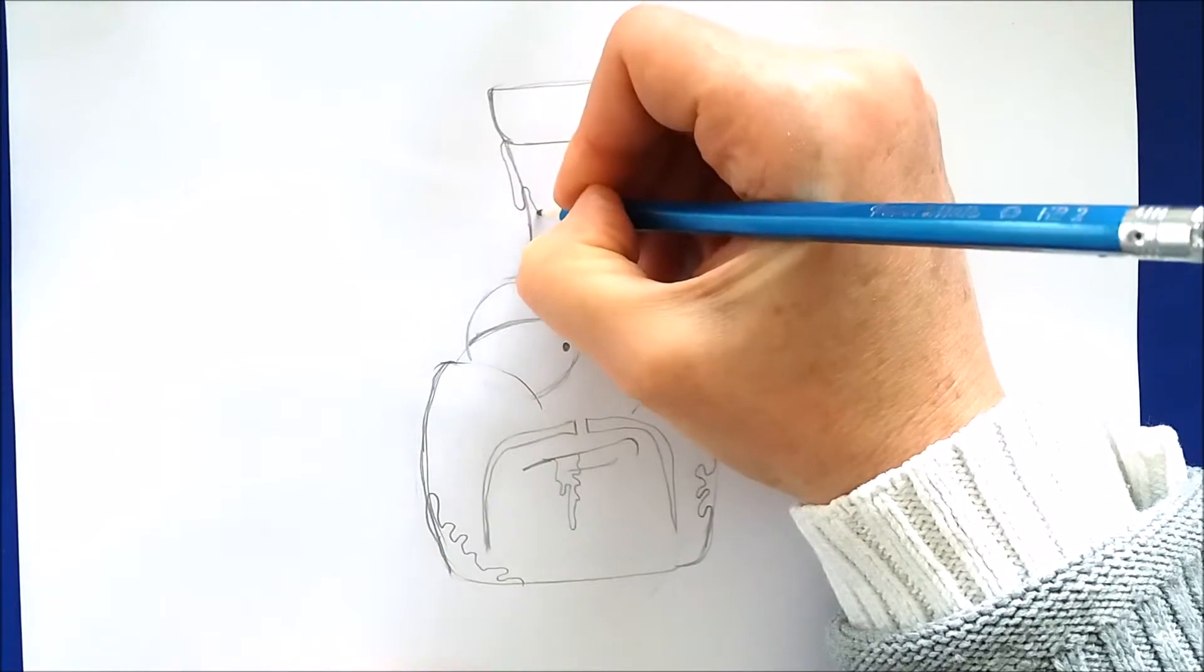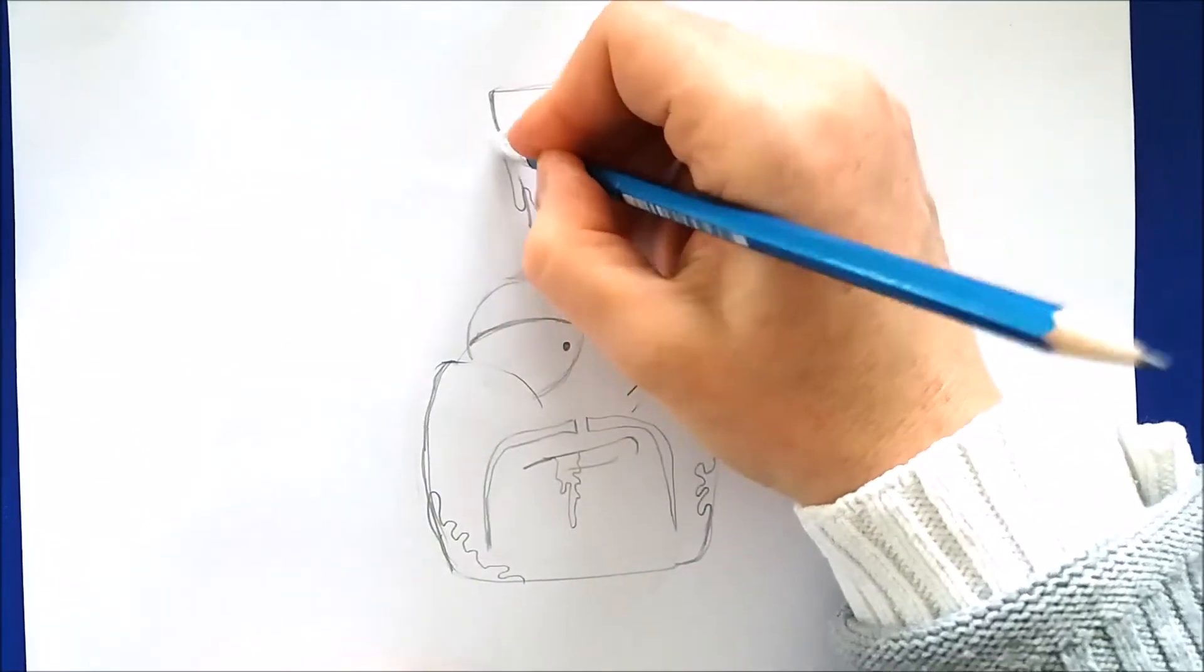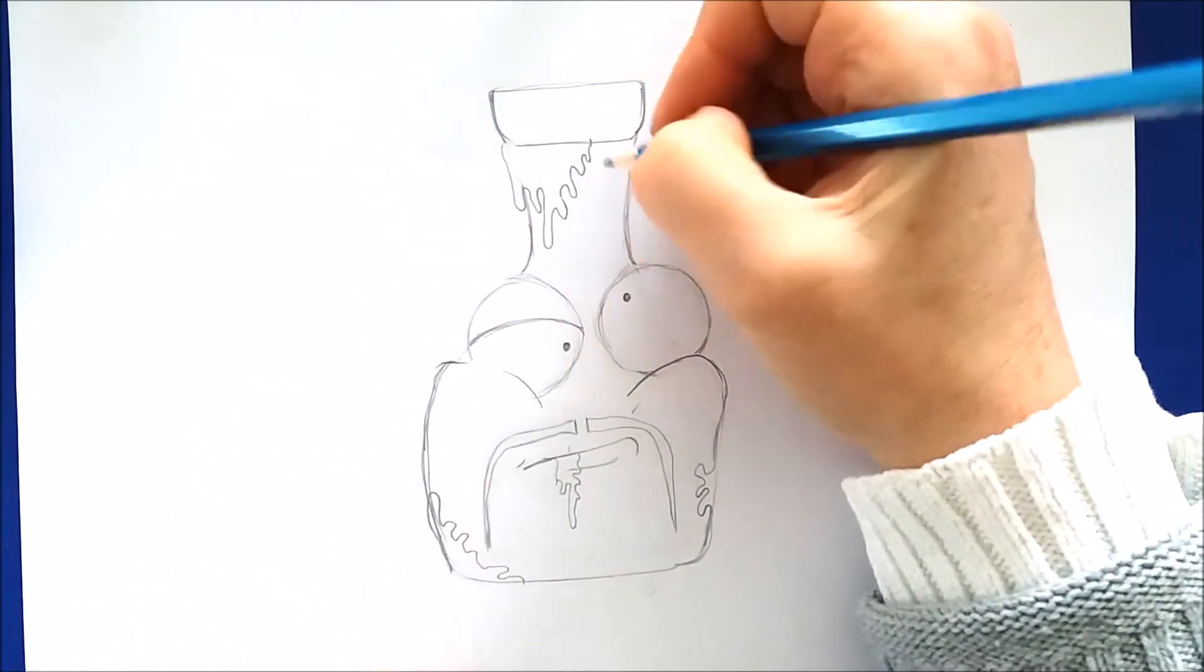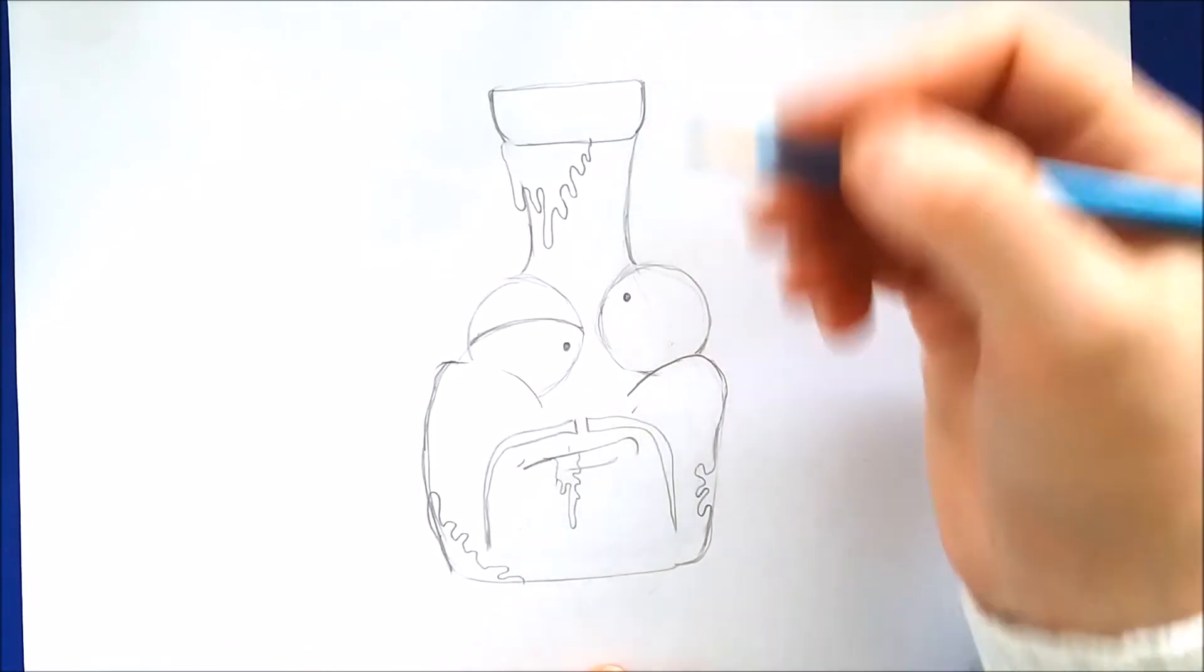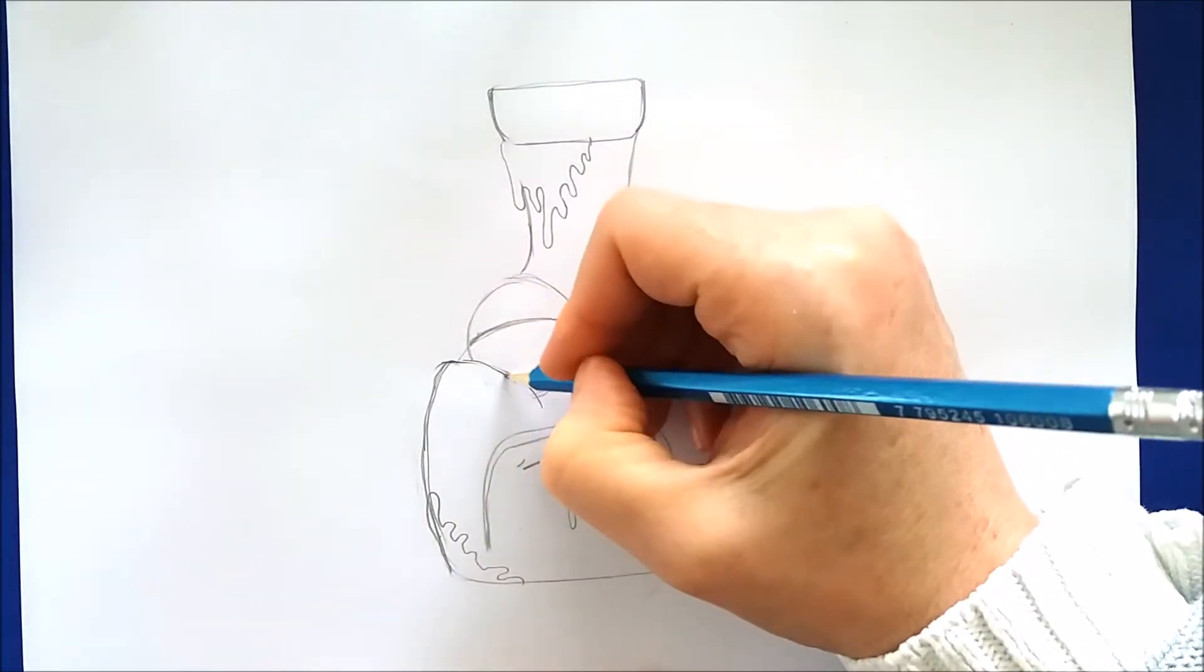And then up here at the lid I'll draw a great big slimy curvy looking piece of mold. And remember when you draw your mold or slime you can draw it however you like. You can add a lot of it or a little of it to create your own unique version of Bad Soy.